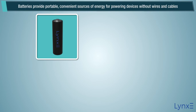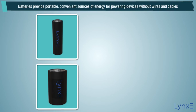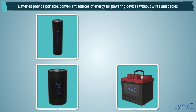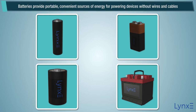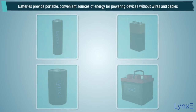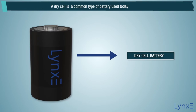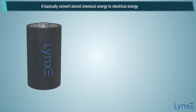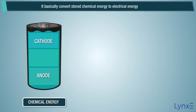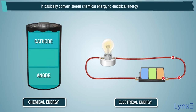Battery. Batteries provide portable, convenient sources of energy for powering devices without wires and cables. A dry cell is a common type of battery used today. It basically converts stored chemical energy to electrical energy.